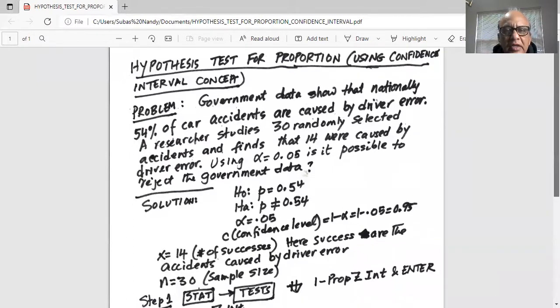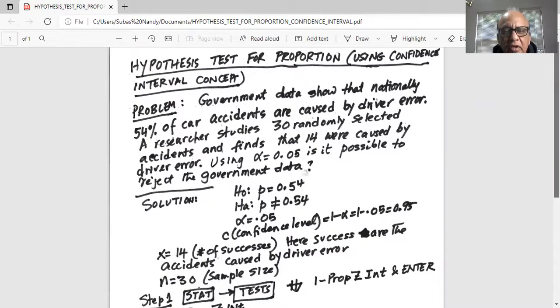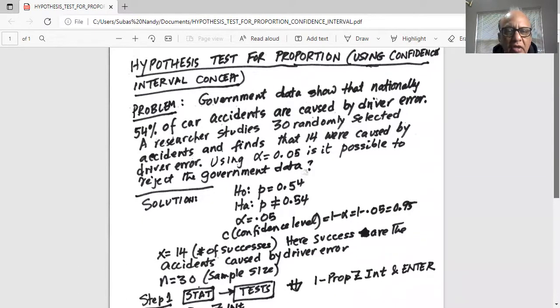Government data show that nationally 54 percent of car accidents are caused by driver error. A researcher studies 30 randomly selected accidents and finds that 14 were caused by driver error.